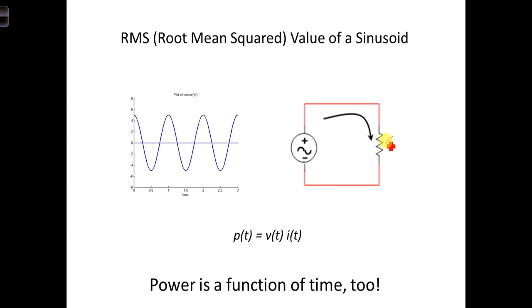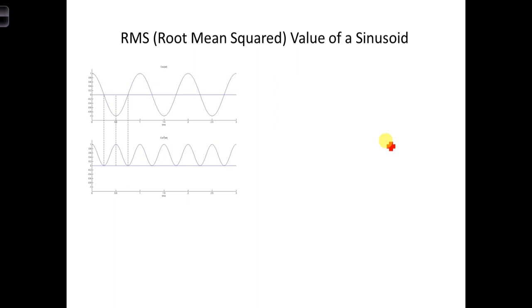So then it becomes interesting to say, well is there a way of determining what the average power is being delivered over one cycle? Is there some effective quantity that we can use to calculate the effective power or the average power that's being delivered to the load?